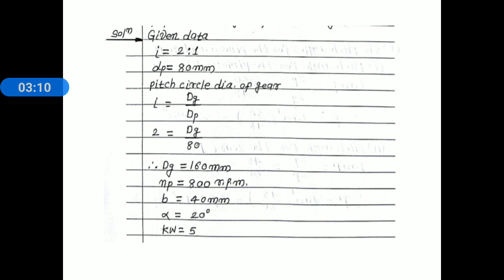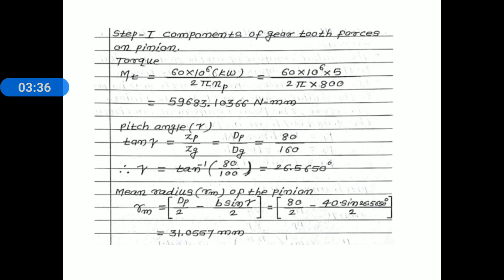This problem is solved in three steps. Step one: find the components of resultant tooth force acting on the pinion. Step two: find the components of resultant tooth force acting on the gear. Step three: draw the free body diagram.